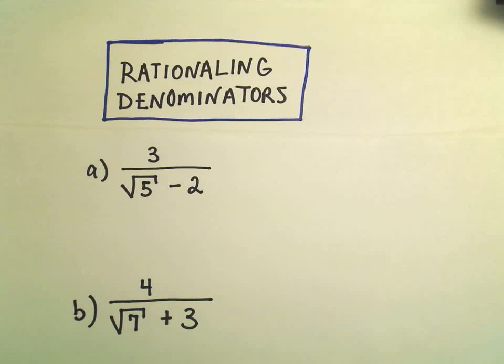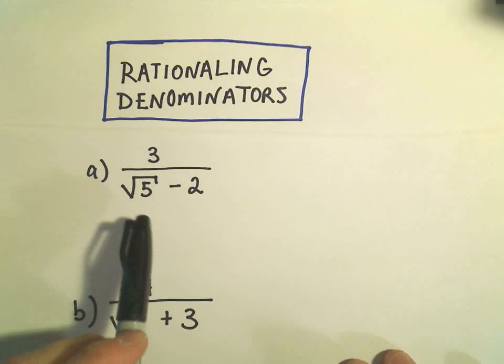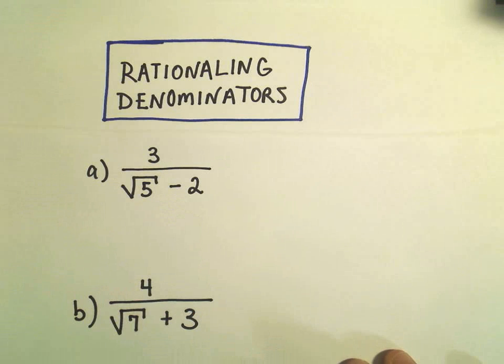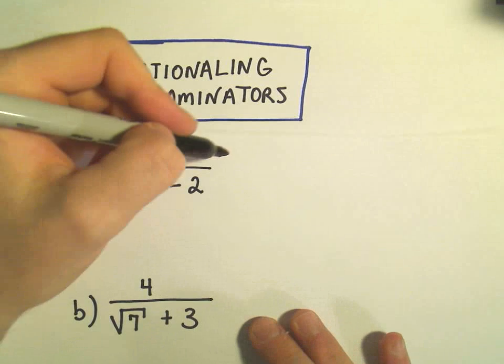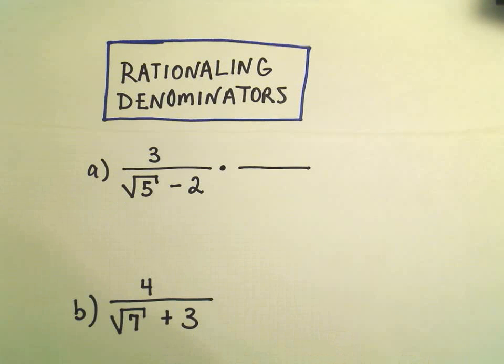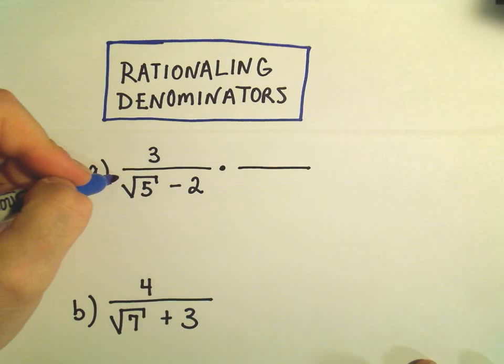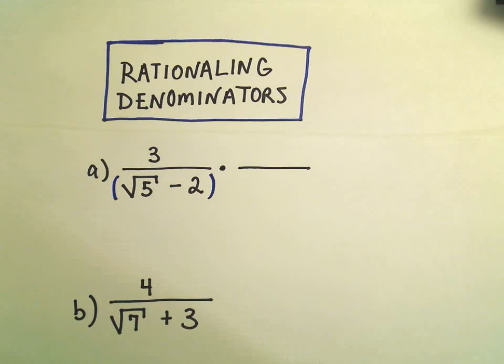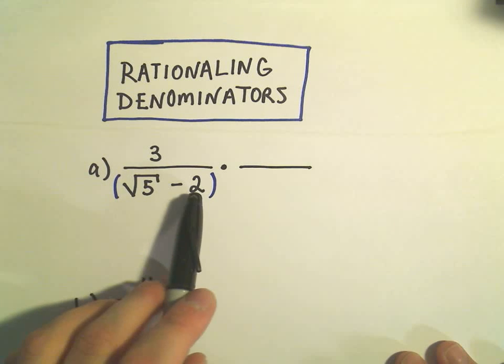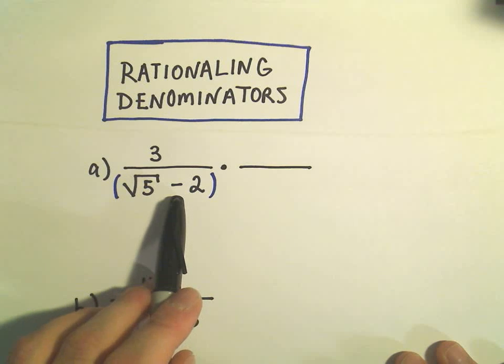So a very common type of problem is what we have here, where you have a binomial in the denominator. And again, the trick to get rid of the radical is you multiply the denominator, and consequently in this case the numerator, by the conjugate. So remember a conjugate says all you have to do is if you have two terms, you just change the sign in the middle.